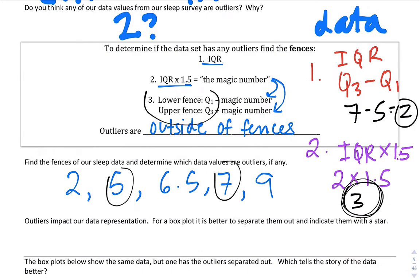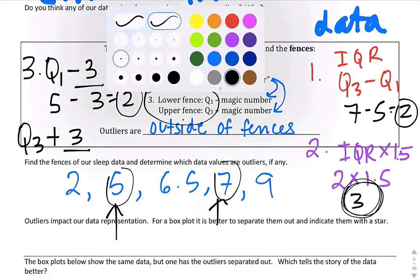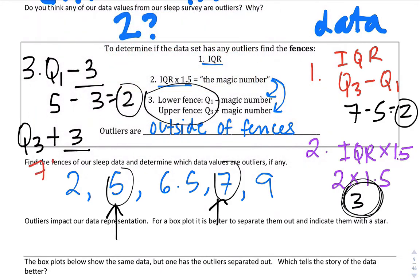Step three — find the fences. The lower fence is Q1 minus our magic number: 5 minus 3 equals 2. The upper fence is Q3 plus our magic number: 7 plus 3 equals 10. So our fences are 2 and 10.